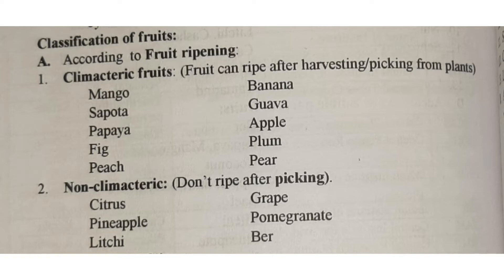So which fruits can ripen after harvest? Mango, sapota, papaya, fig, peach, banana, guava, apple, plum, pear. These are the common climacteric fruits.